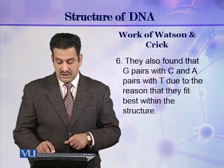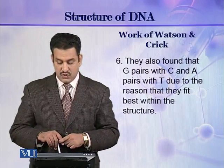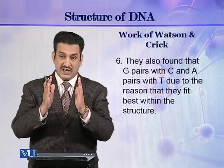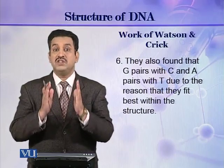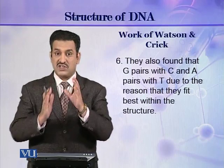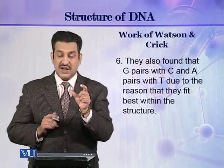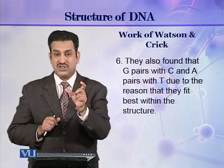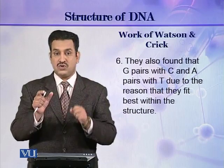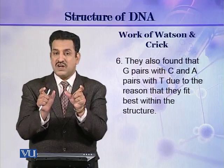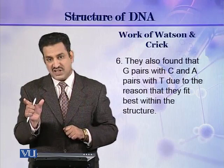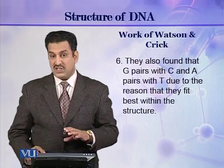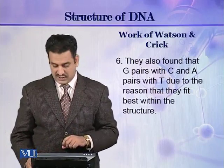The next important point they described is that G will always pair with C, while A will always pair with T. In a uniform helix, A joining with T and G joining with C best fits the structure. Adenine is a purine of larger size and thymine is a pyrimidine of smaller size. Similarly, G is a purine of larger size and C is a pyrimidine of smaller size. So one base is larger and the other is smaller, and in this way a uniform helix is formed.